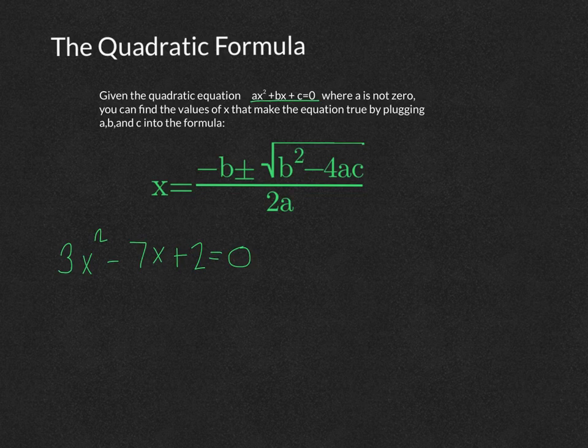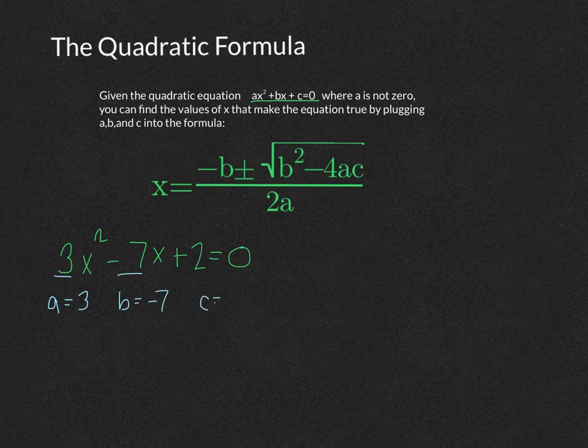The first thing you would want to do is find your a, which is the value on the x squared, your b, which is the value on the x. Make sure you include, if it's a minus, that it becomes a negative 7, and your c will be the constant all by itself, so we've got the 2.